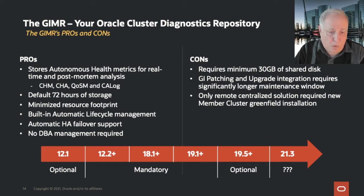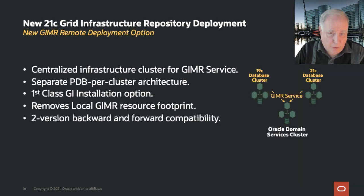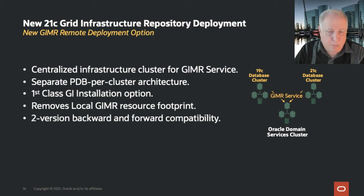What is happening in 21.3? We have a new GIMR deployment option that allows your existing clusters to make use of a centralized GIMR service. You install what we call a domain services cluster, which has one PDB for each of your remote clusters — those can be existing 19c or 21c clusters. It is a first-class GI install option, an infrastructure cluster dedicated to this purpose, which removes the local GIMR footprint for both memory and storage resources. It also includes two-version backward and forward compatibility, so you don't have to upgrade it in lockstep with your production systems.